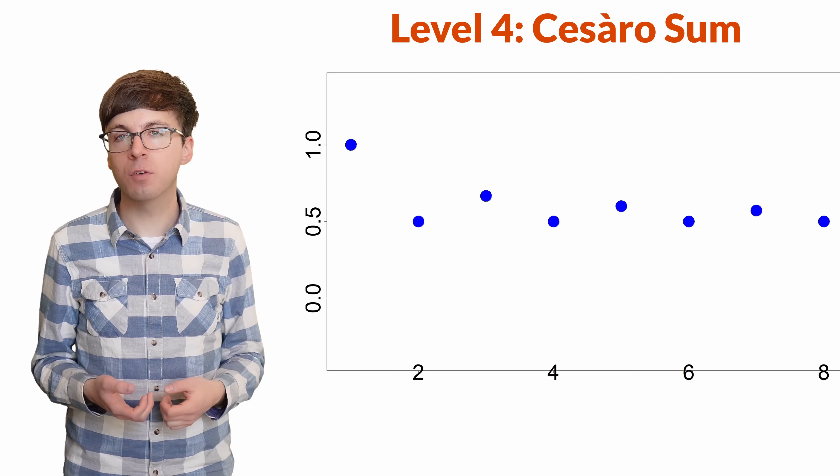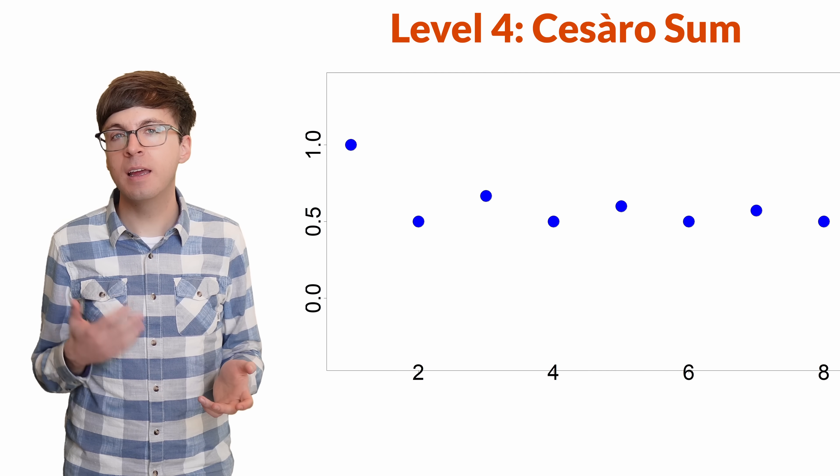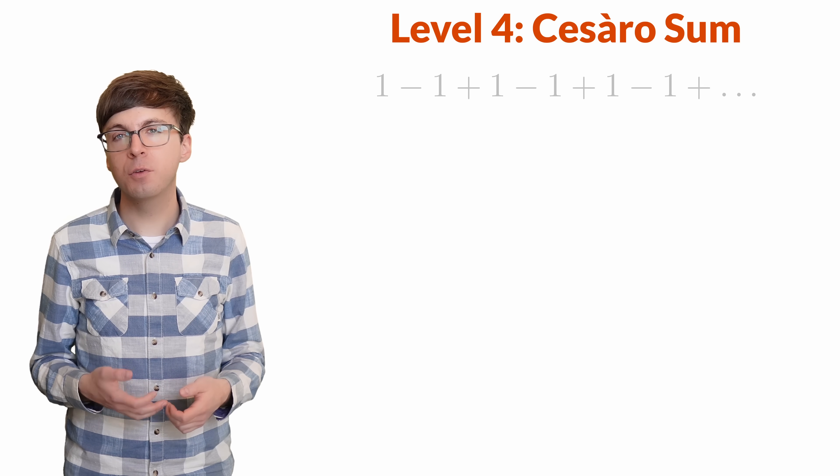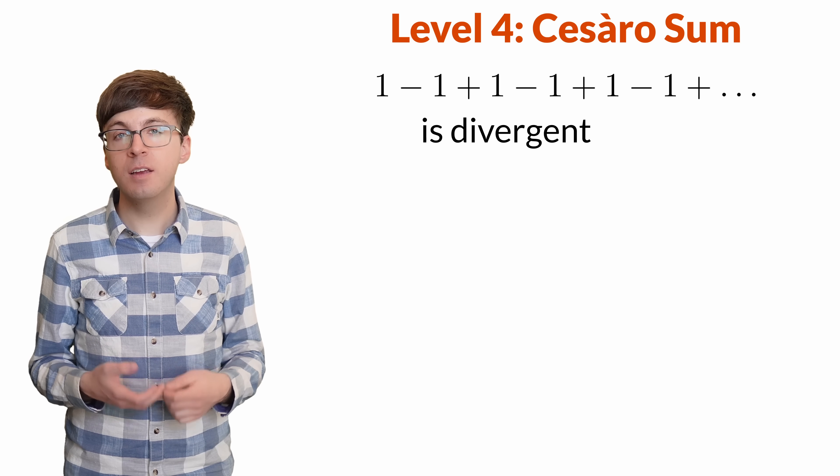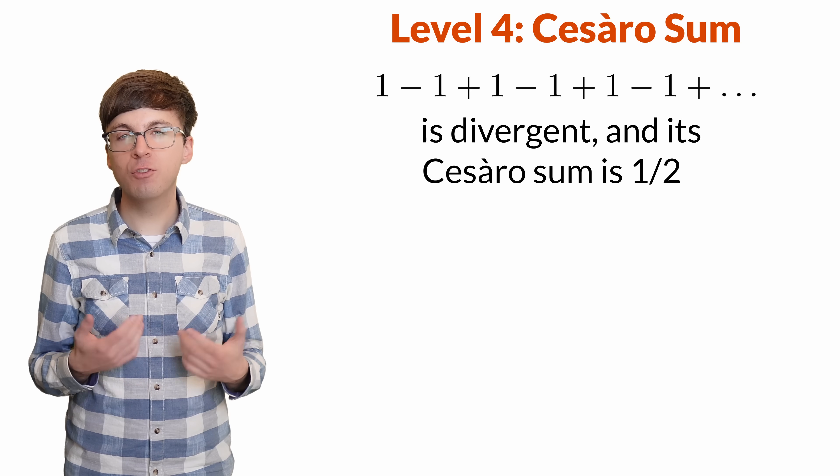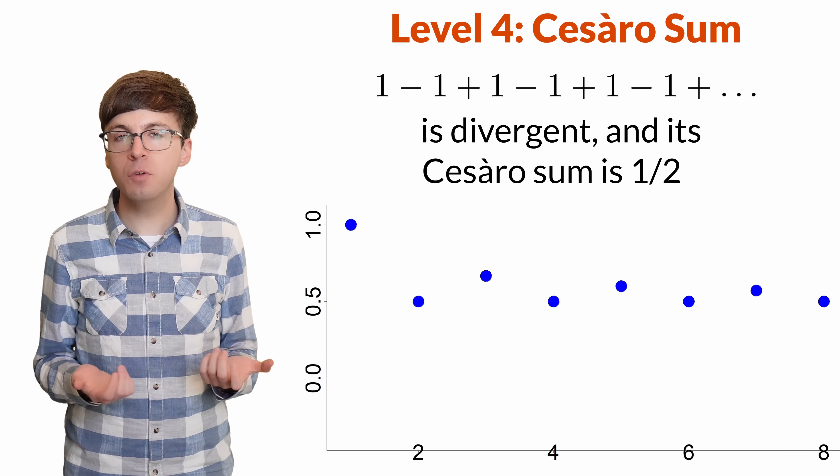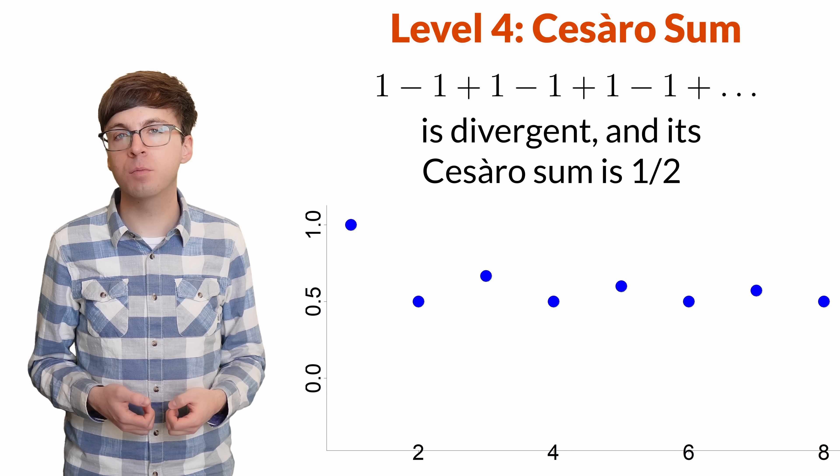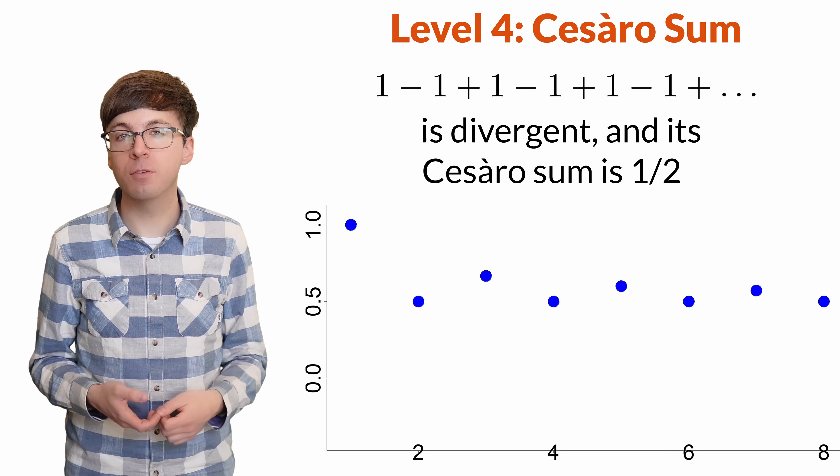This makes sense for Cesaro's probabilistic approach, since half the time the partial sum is 0, and half the time it's 1. So this series is divergent, but we can use Cesaro's technique to get that the Cesaro sum of the series is 1 half. Cesaro summation allows us to get values for certain divergent series, and it's also proven extremely useful in the field of probability. Cesaro sums actually played an important role in my thesis research.